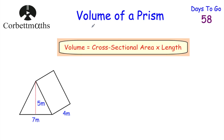Let's start off by finding the volume of a prism. To find the volume of a prism, we find the cross-sectional area — the area of the cross-section — and multiply by the length of the prism. So if we wanted to find the volume of this triangular prism, we find the area of this front triangle and then multiply by how long the prism is.